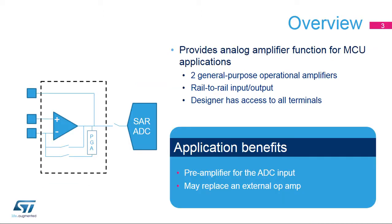Each of the two operational amplifiers inside STM32H7 products functions as a general-purpose analog amplifier, which may reduce the need for an external stand-alone op-amp. As these op-amps can be configured in stand-alone mode with all terminals available for the user,